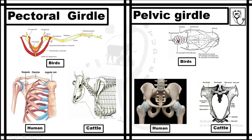Moreover, the six posterior caudal vertebrae of a chicken form a bone called the pygostyle.